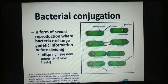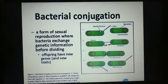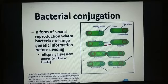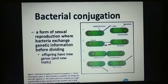The donor (male) cell connects to the female cell. It has a fertility plasmid, also called the F-factor or mobile plasmid. This plasmid carries genetic material and transfers it to the recipient cell. New donor cells are formed. Conjugation is a form of sexual reproduction where bacteria exchange genetic information before dividing, so offspring have new genes and new traits — meaning new characters. This is a type of sexual reproduction.